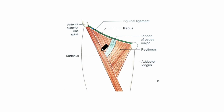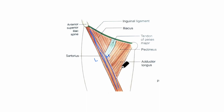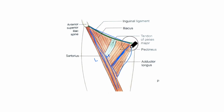Looking at the boundaries of the femoral triangle: laterally it is bounded by the medial border of the sartorius muscle. Medially the femoral triangle is bounded by the medial border of the adductor longus muscle. The base of the triangle is formed by the inguinal ligament, and the apex is directed downwards, formed by the point where the medial and lateral boundaries cross.